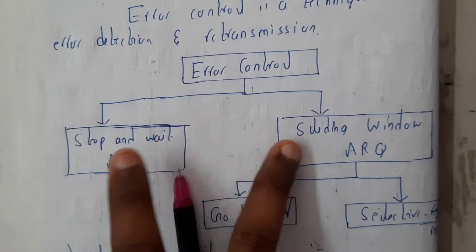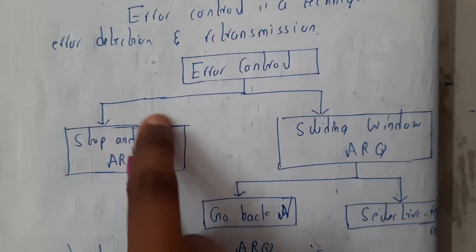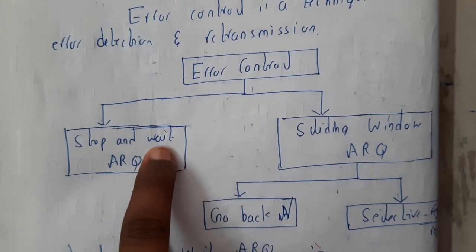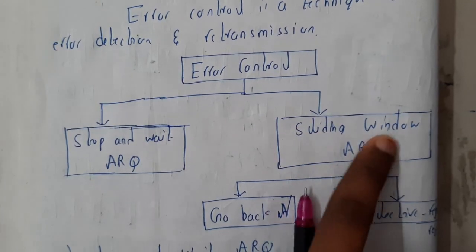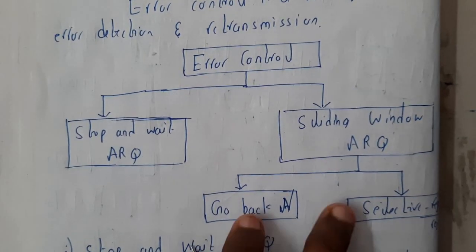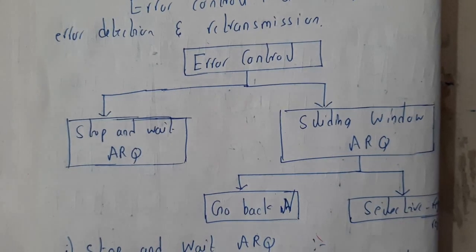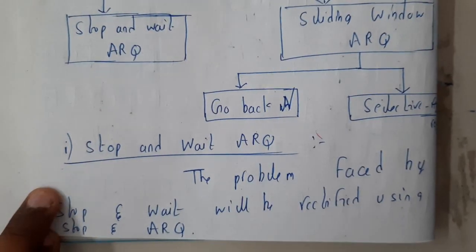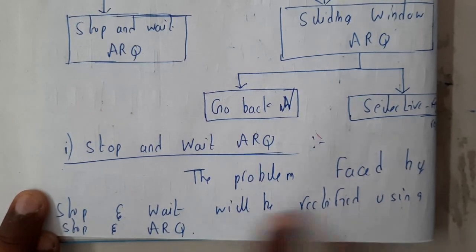There are two main methods: Stop-and-Wait ARQ, which rectifies the problems we face in Stop-and-Wait, and Sliding Window ARQ. The problems faced in sliding window can also be rectified using these two methods. Let us first discuss about Stop-and-Wait ARQ.